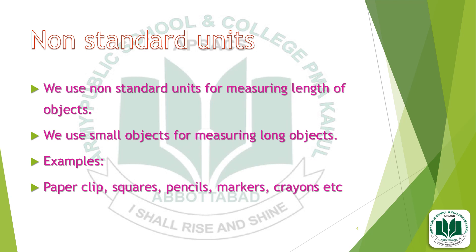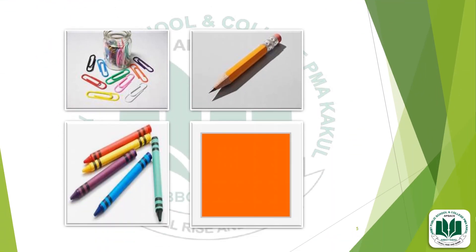We use small objects for measuring long objects. For example, we use paper clips, squares, pencils, markers, crayons, and many other small things to measure the length of long things. Look at the screen, students. Here are the paper clips which we will use to measure the length of long objects. This is a pencil, crayons, and squares. One by one, we use all these things to measure the length of long objects.